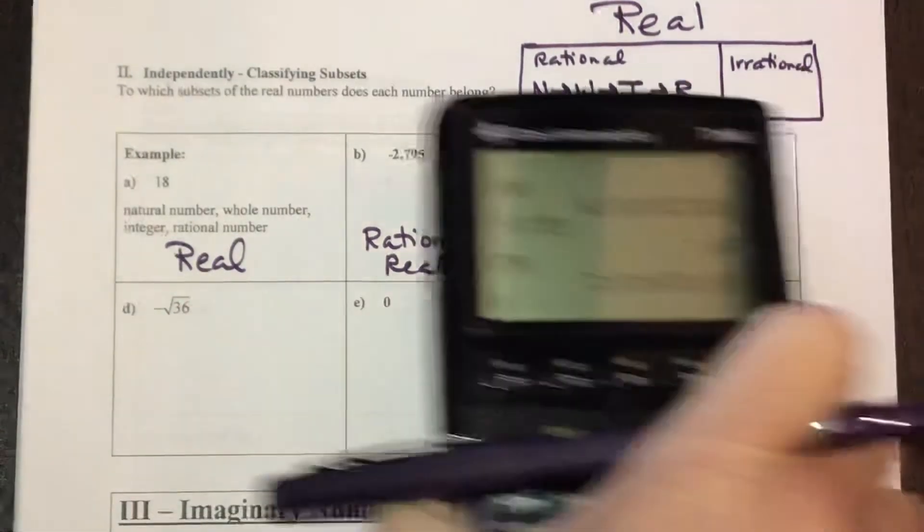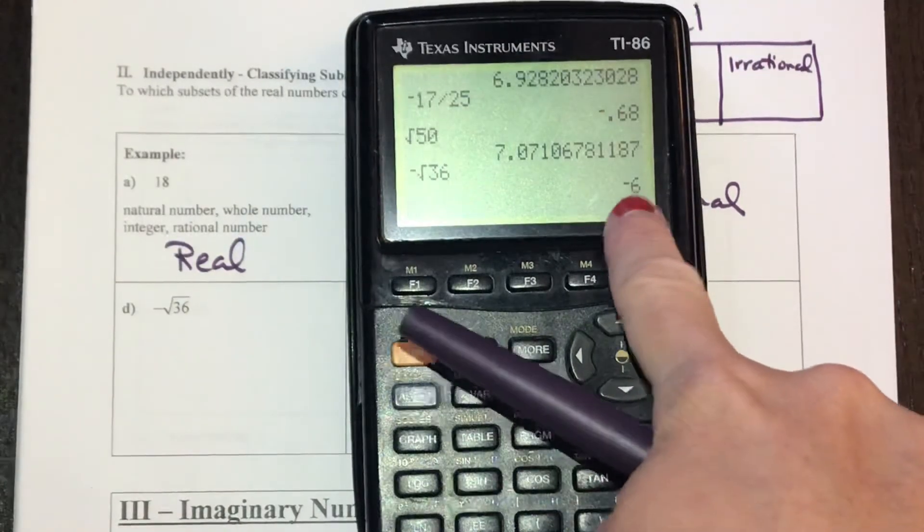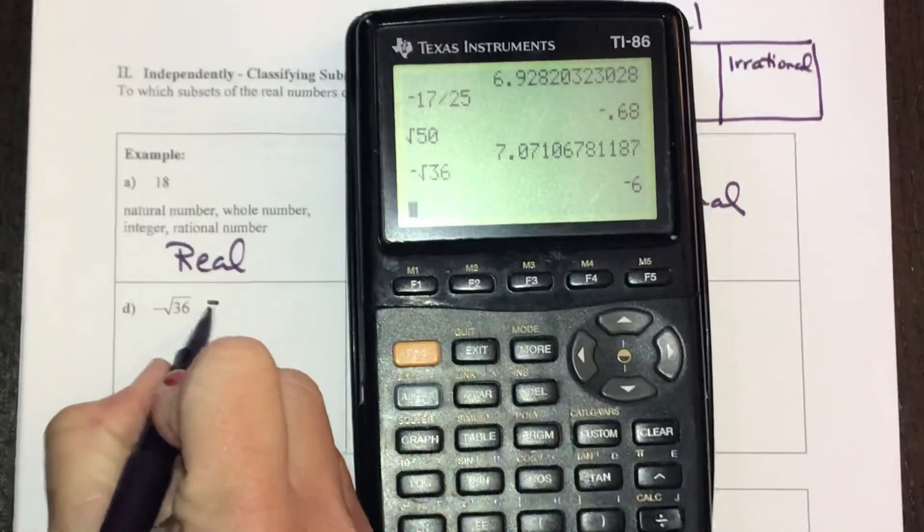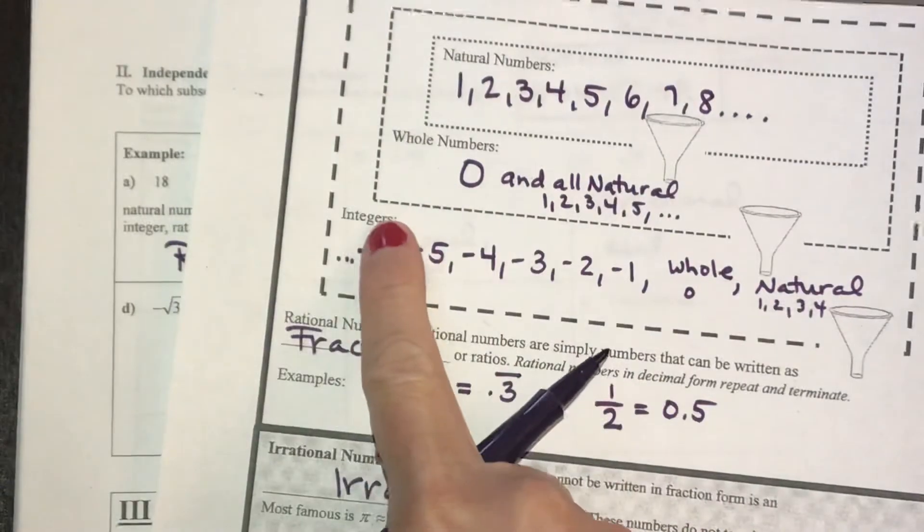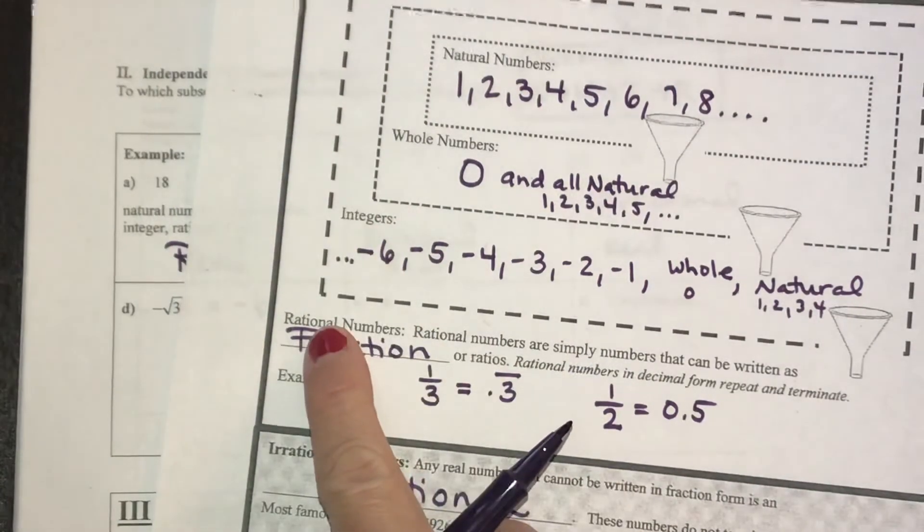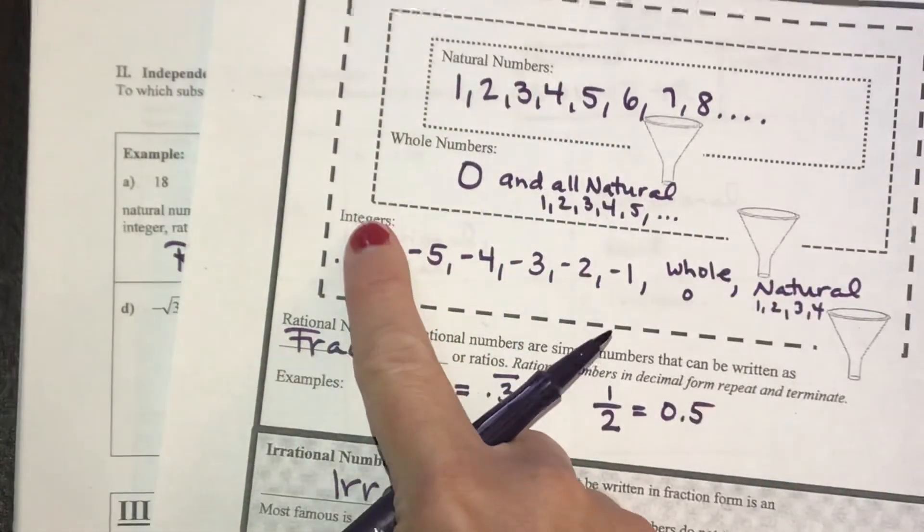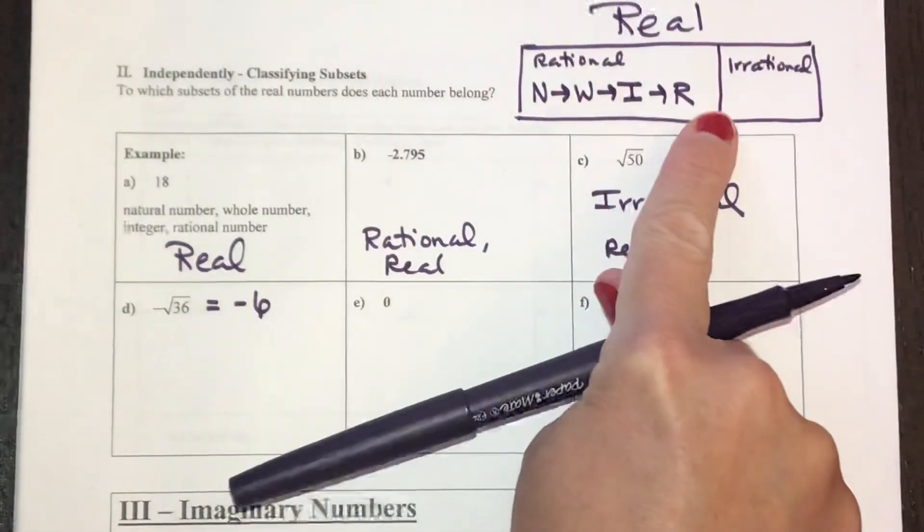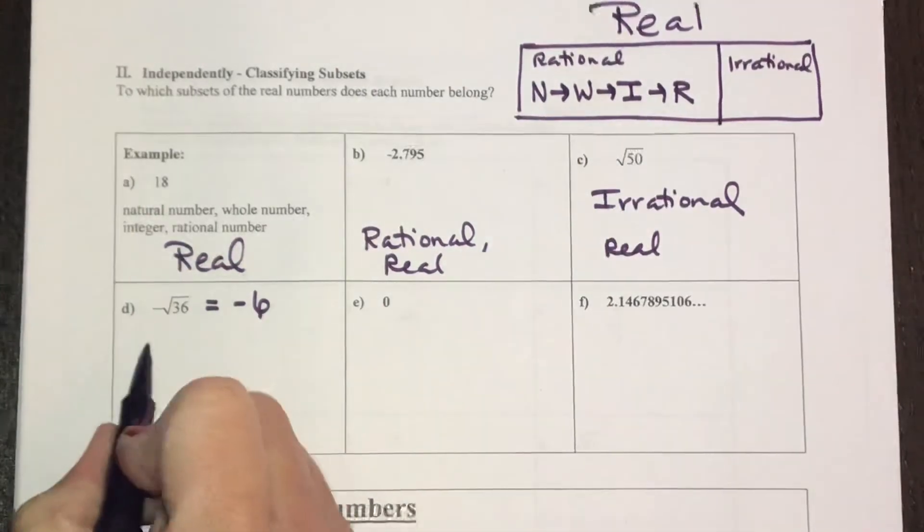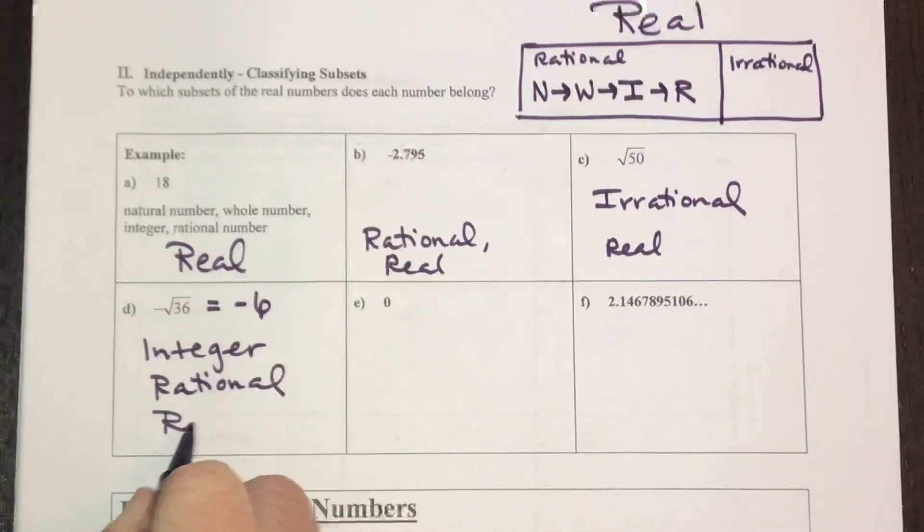Negative square root of 36, this is the whole number negative 6. Like I said before, the negatives, when you have a negative, we're in the group of integers. Integers are also a subgroup of rationals. Because this is negative, it cannot be whole, it cannot be natural. So I'm going to classify it as an integer and rational because integers is inside of rational. On my handy chart here, as I go from left to right, if I say it's an integer, it also has to be rational and it also has to be real.